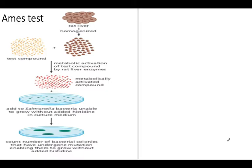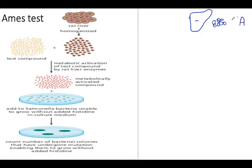The Ames test is a straightforward way to assess mutagenic potential. In this test, you take a rat liver homogenate and mix it together with the test substance, because you want to convert the compound into its active metabolite form.